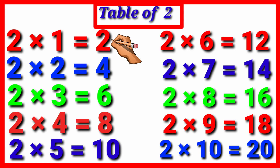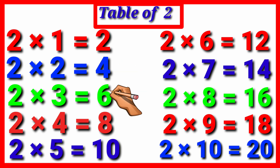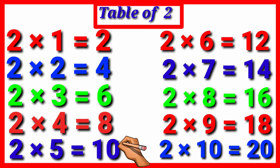2 1s are 2. 2 2s are 4. 2 3s are 6. 2 4s are 8. 2 5s are 10. 2 6s are 12.